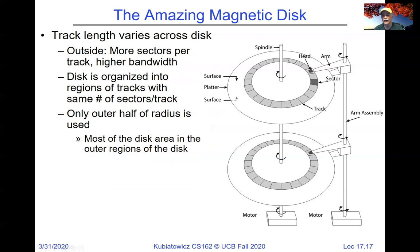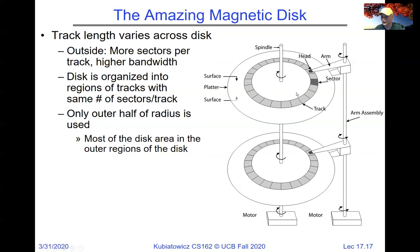Track length varies across the disk — on the outside there's a lot more surface going by than on the inside. Sectors are all the same density because you want to store bits at a given density on the disk. When the arm is on the outside, sectors go by faster than on the inside, so the data rate varies between outside and inside tracks to maintain a constant areal density. Also, these disks are getting so big that the time to read a whole disk is becoming too long to even back up, so companies like Google split disks into active data and archival storage that's almost never touched.